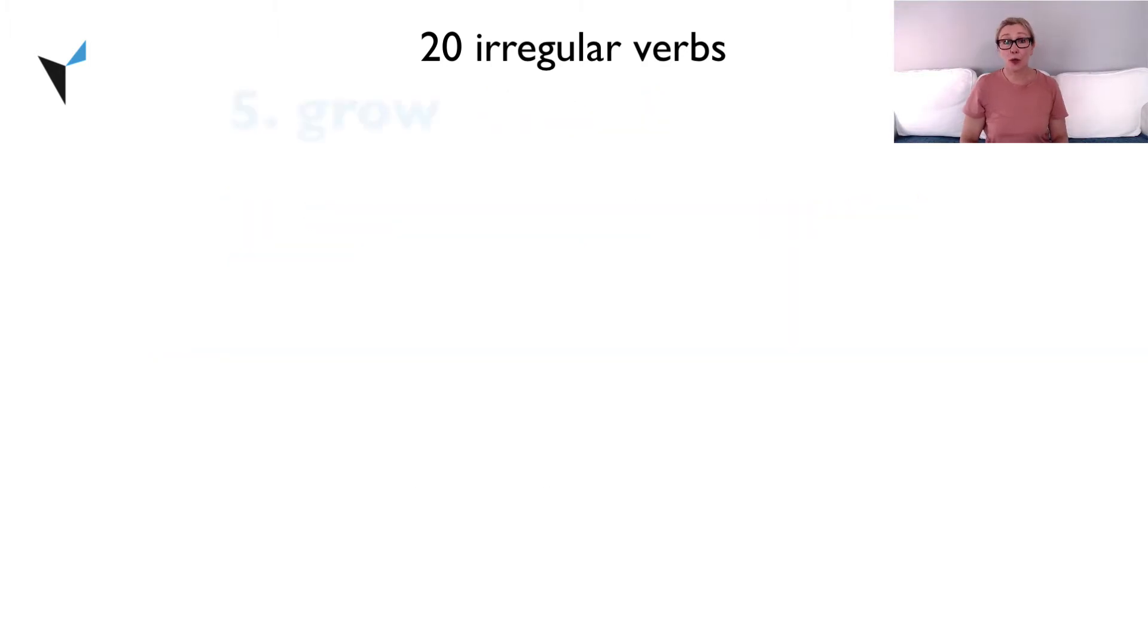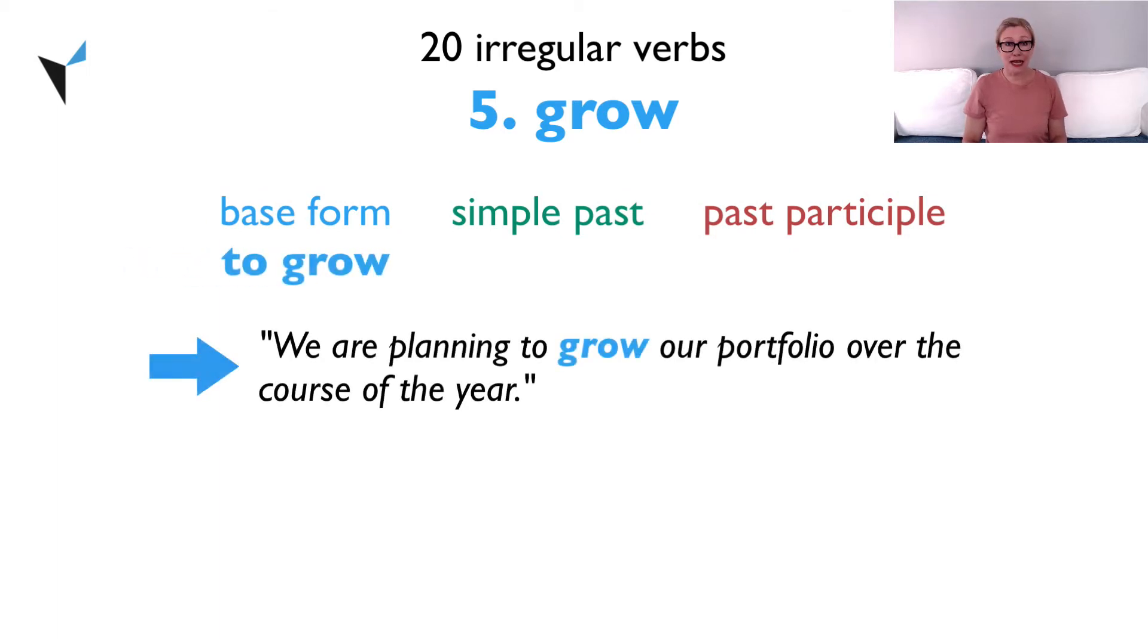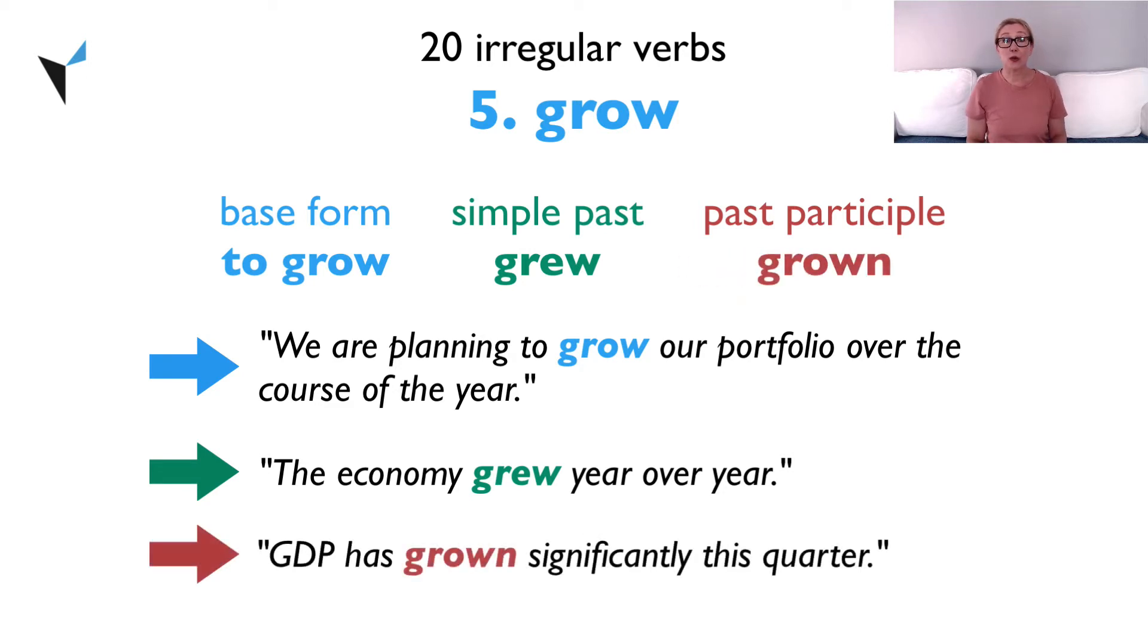Verb five, grow. The base form is to grow. We are planning to grow our portfolio over the course of the year. The simple past is grew. The economy grew year over year. And the past participle is grown. GDP has grown significantly this quarter.